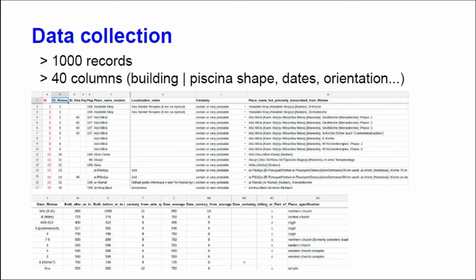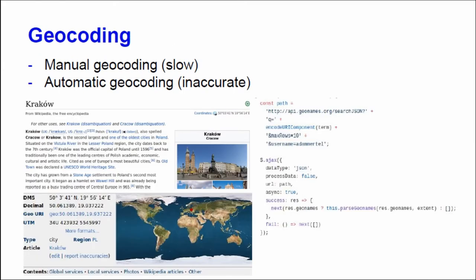At this point we had a table with all qualitative and quantitative information. To analyze it with GIS and mapping, we had to geocode the data. In general, there are two possible approaches — kind of extremes. The first is manual geocoding using a reference system like Wikipedia: you look up a place like Krakow and copy and paste the coordinates into the table.